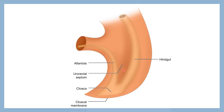Next, the urorectal septum grows deeper and divides the endodermal cloaca into an anterior part and a posterior part. The anterior part is called the urogenital sinus and the posterior part becomes the primitive rectum. The part connecting the urogenital sinus and the primitive rectum is through the cloacal duct. In coronal section, the urorectal septum is formed by three elements: one vertical element and two lateral folds called Rathke's projections, which contain the mesonephric and paramesonephric ducts. These three elements together form the urorectal septum.